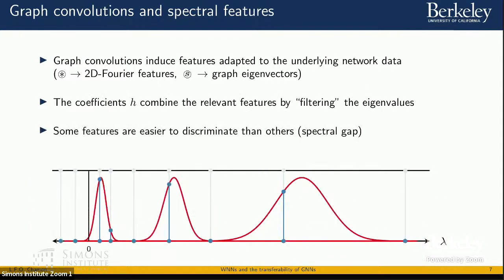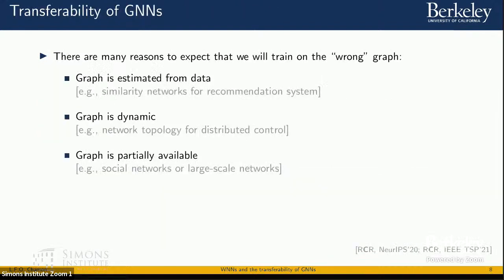Depending on the gap between spectral features, they may be easier or harder to discriminate — which highlights the importance of choosing the graph that induces the convolution properly for the specific application. In practice, there are many reasons to believe we will choose the wrong graph. The first reason is that this graph is typically estimated from data — for example, using a covariance matrix estimated from data — so we get the wrong graph because we don't have access to the real one.